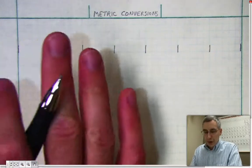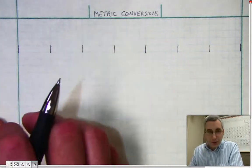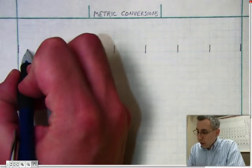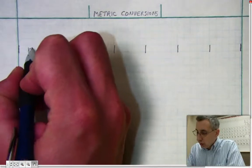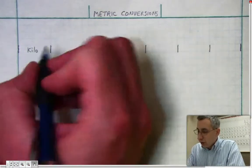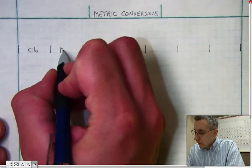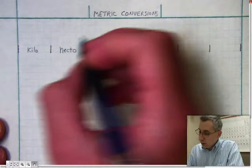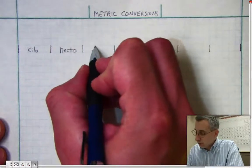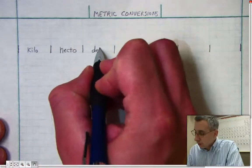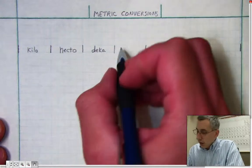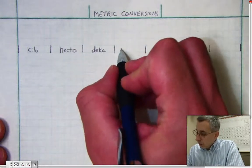So we need to use our prefixes for the metric system. And hopefully you'll remember these: we have Kilo, Hecto, Deca, and what comes next is the base unit.